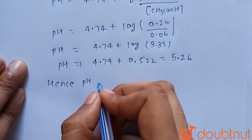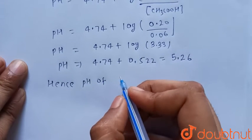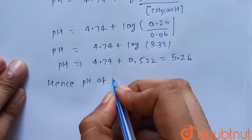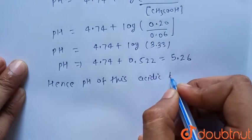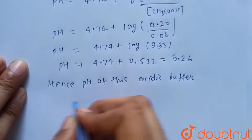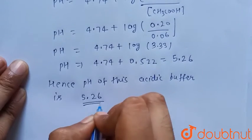The pH of this buffer, a mixture of sodium acetate and acetic acid, is 5.26. This is our final answer.